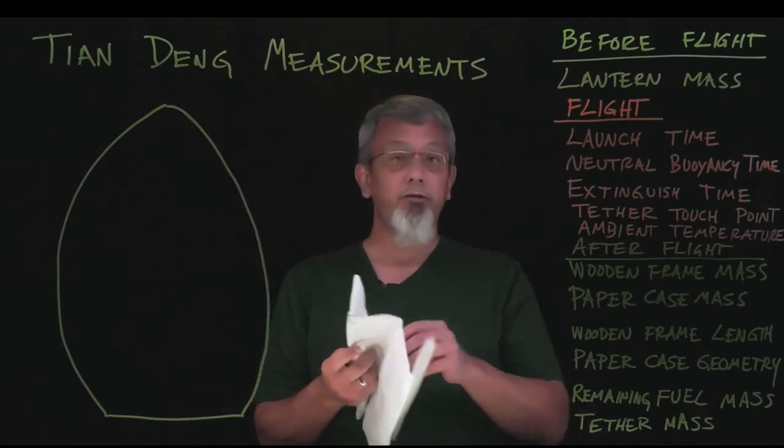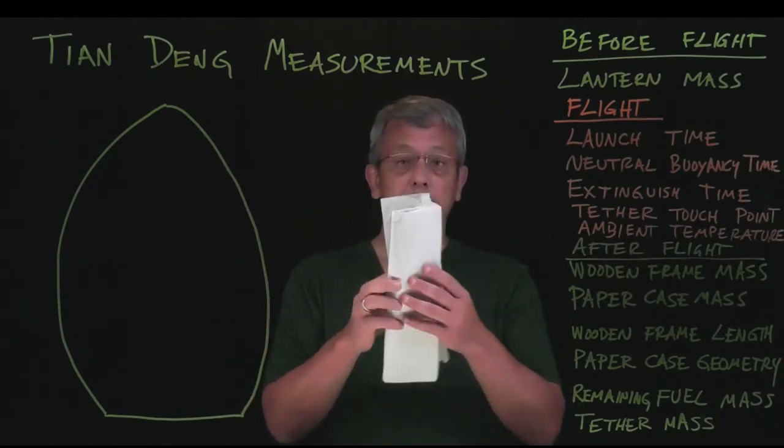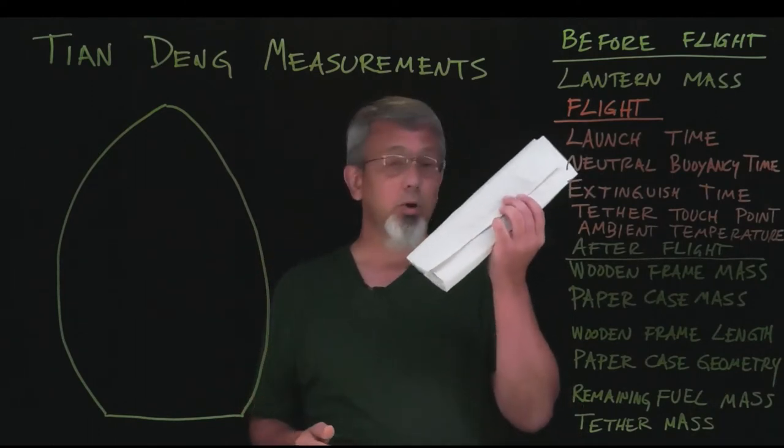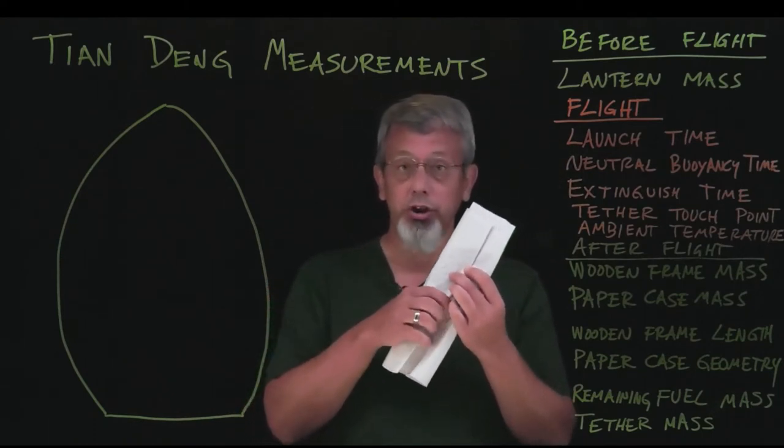Tian Deng is a Chinese fire lantern, and when you receive it, it will come in a package where it will be nicely folded in a piece of paper looking something like this, although it may vary a little bit depending on the version that you get.